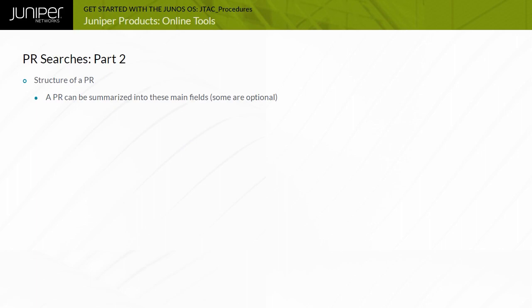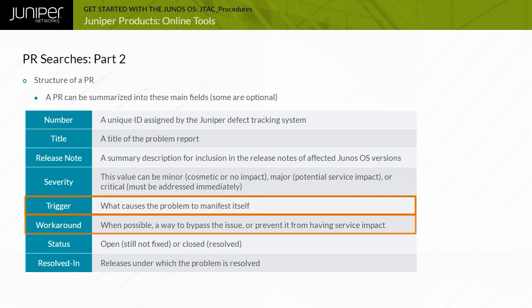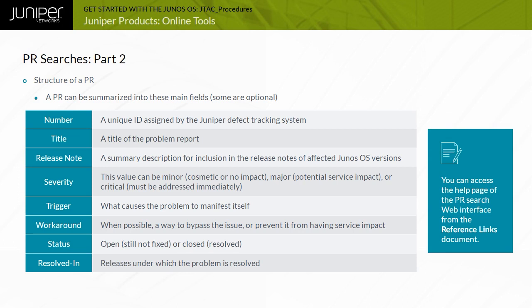The structure of a PR includes main fields such as number, title, release note, severity, trigger, workaround, status, and resolved-in. Among these fields, trigger and workaround are of particular interest — together they can help you decide the best way to minimize the impact of a software issue until the network can be upgraded to an unaffected release. A PR can also contain several additional fields; the complete list is available on the help page of the PR search web interface.